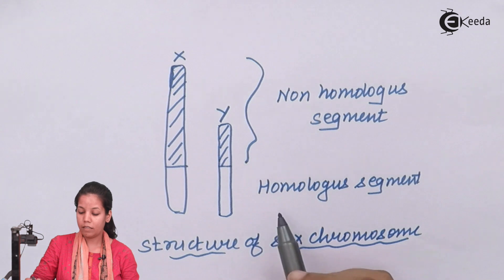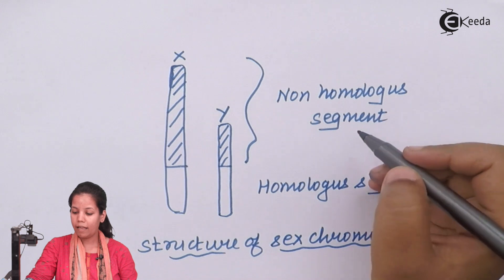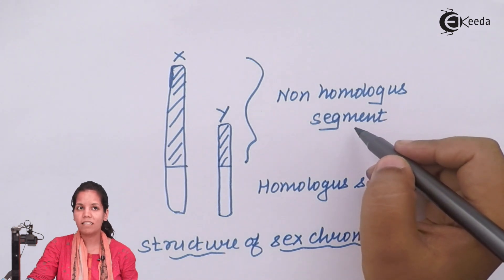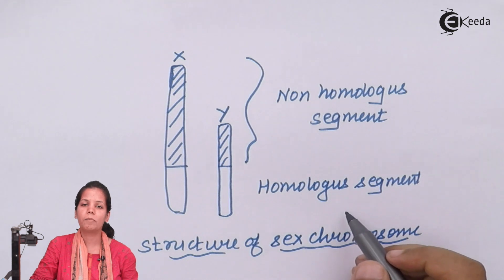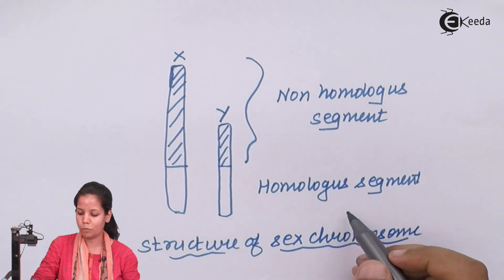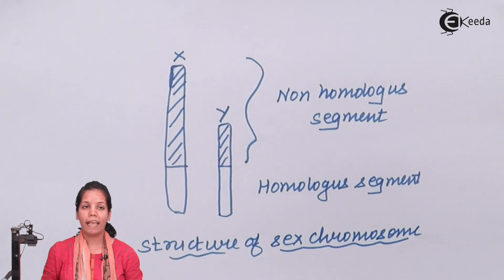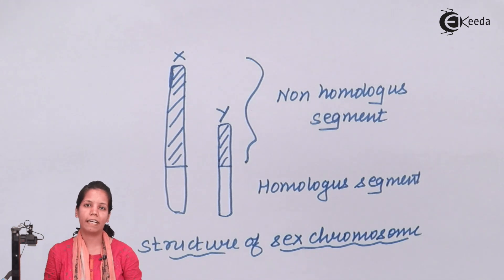We observe two different kinds of chromosomes: X and Y. The non-homologous segment is the one containing different kinds of genes, whereas the homologous segment is the one that contains similar kinds of genes. The differences in chromosomes — XY and XX — are very important, and these homologous and non-homologous regions contain genes which determine genetic characteristics and various functions in the body.